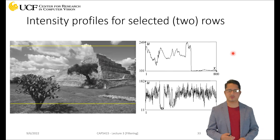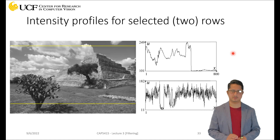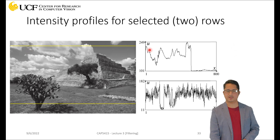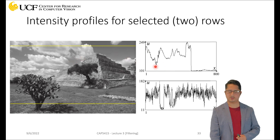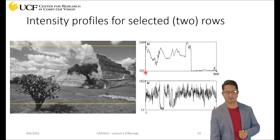Before talking about image noise, let's try to understand what each of these pixel values mean. We'll do a simple analysis called intensity profiles. On the left we have our grayscale image with two yellow horizontal lines drawn. On the right, this is not a histogram — it's an intensity profile showing how pixel intensity changes as you move from left to right along the yellow line. Since this is a grayscale image, each pixel value is between 0 and 255.